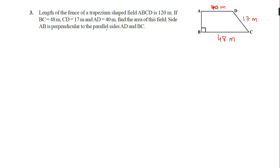Side AB is perpendicular to the parallel sides. To find AB: 120 minus the sum of the other sides — that is 40, 48, and 17. So 120 minus 105 gives AB equal to 15 meter.